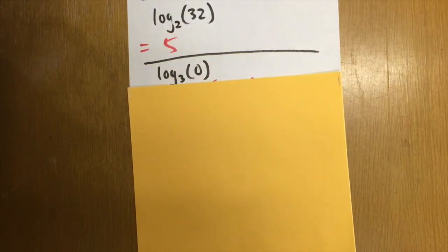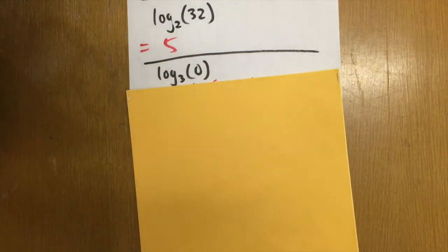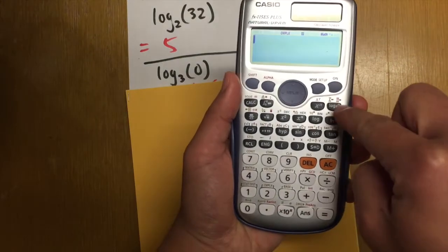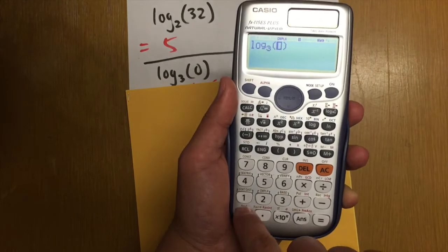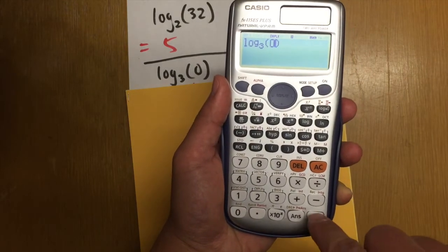One more just for practice. Log base 3 of 0. Well, let's see. I am going to use this log key. Base is 3. Press right. And then I'm going to enter 0. And then equal.